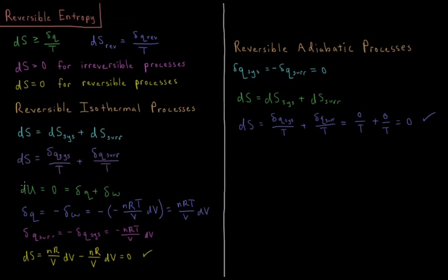For our system, du is equal to zero, which is equal to dq plus dw. The heat plus the work is the total energy change, which is zero. So the heat is equal to the negative work, which equals minus times negative nRT over V dV. So the heat in our reversible isothermal process for ideal gases is nRT over V dV. And the heat of the surroundings equals the negative heat of the system, so that's negative nRT over V dV.